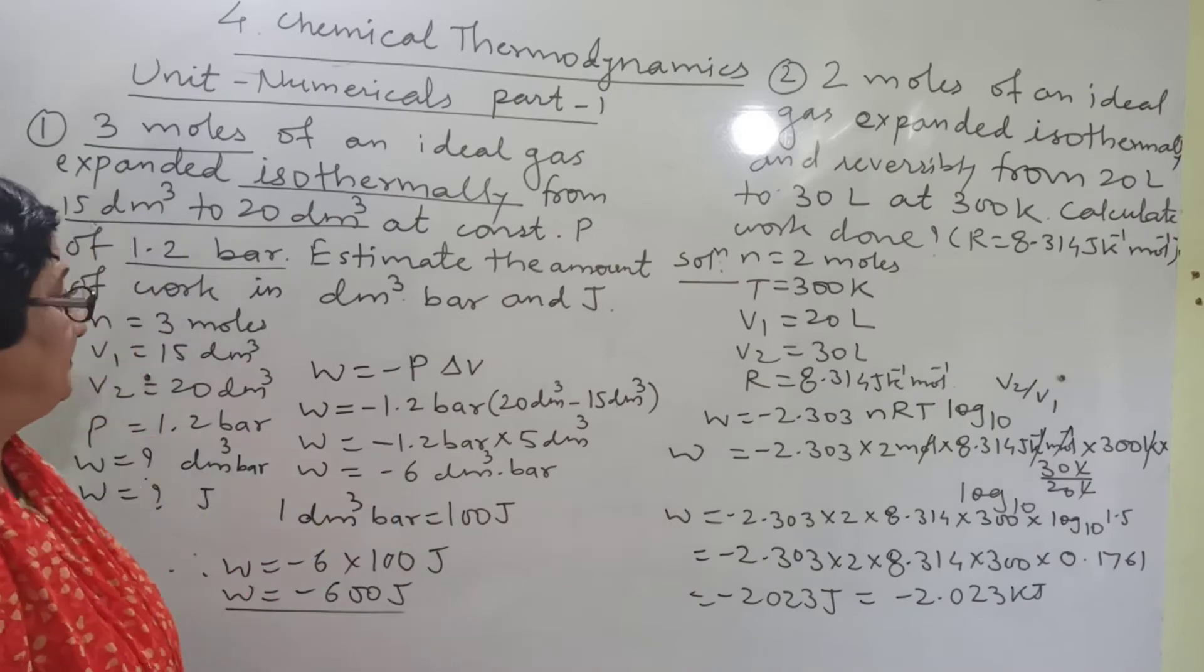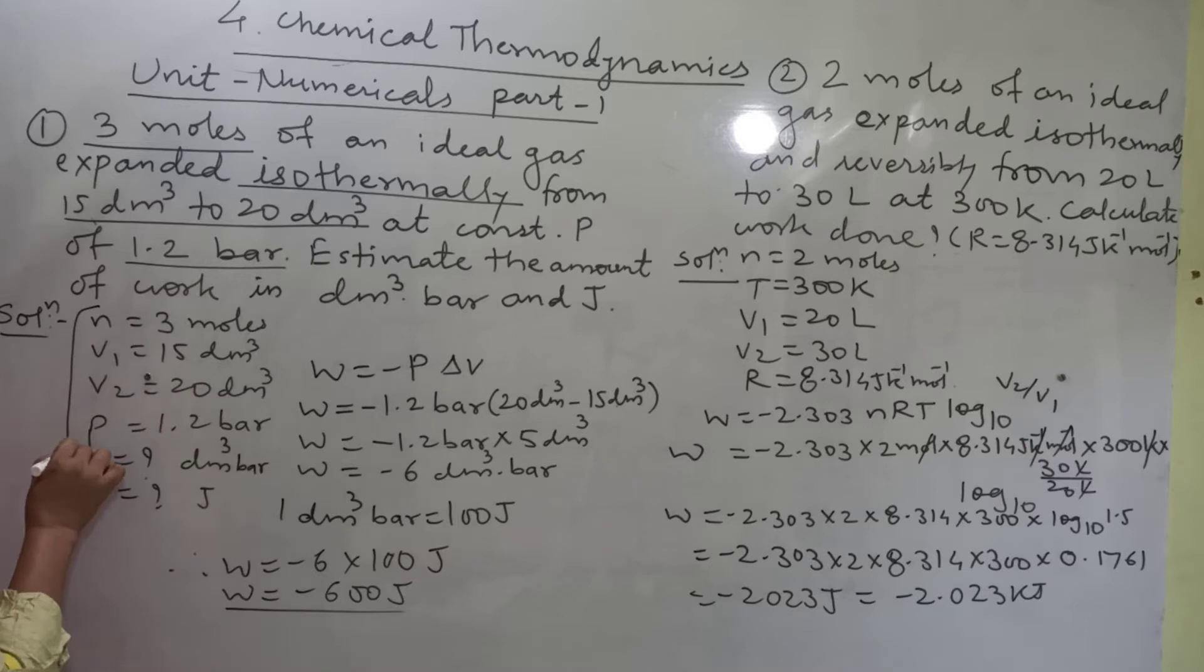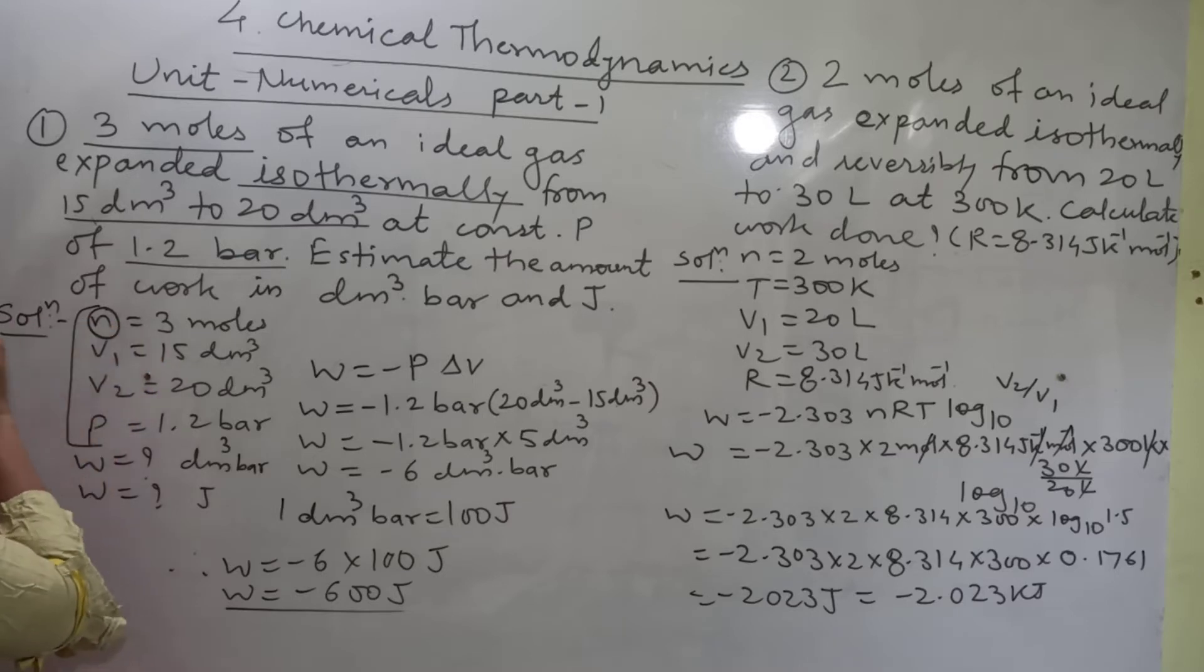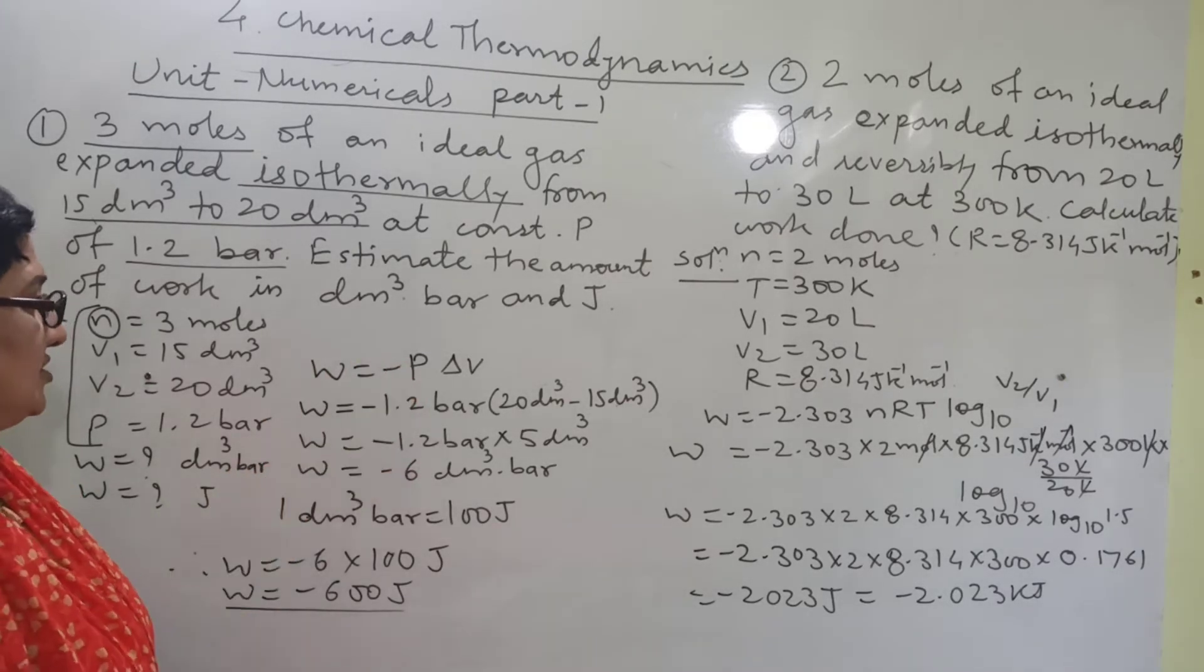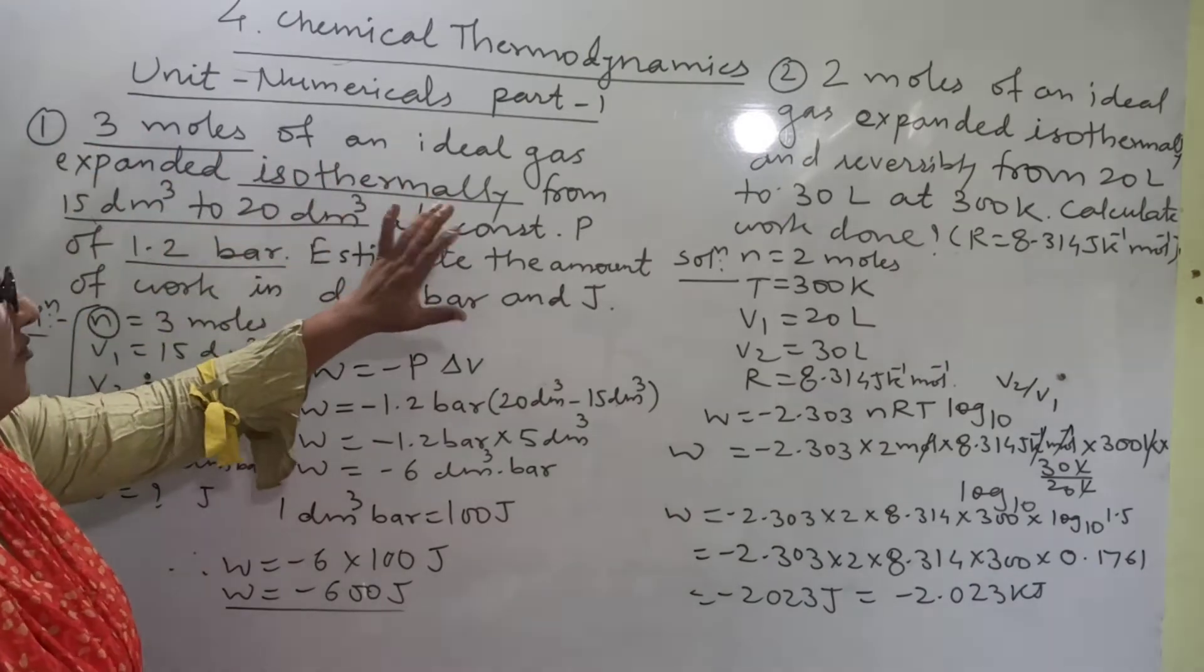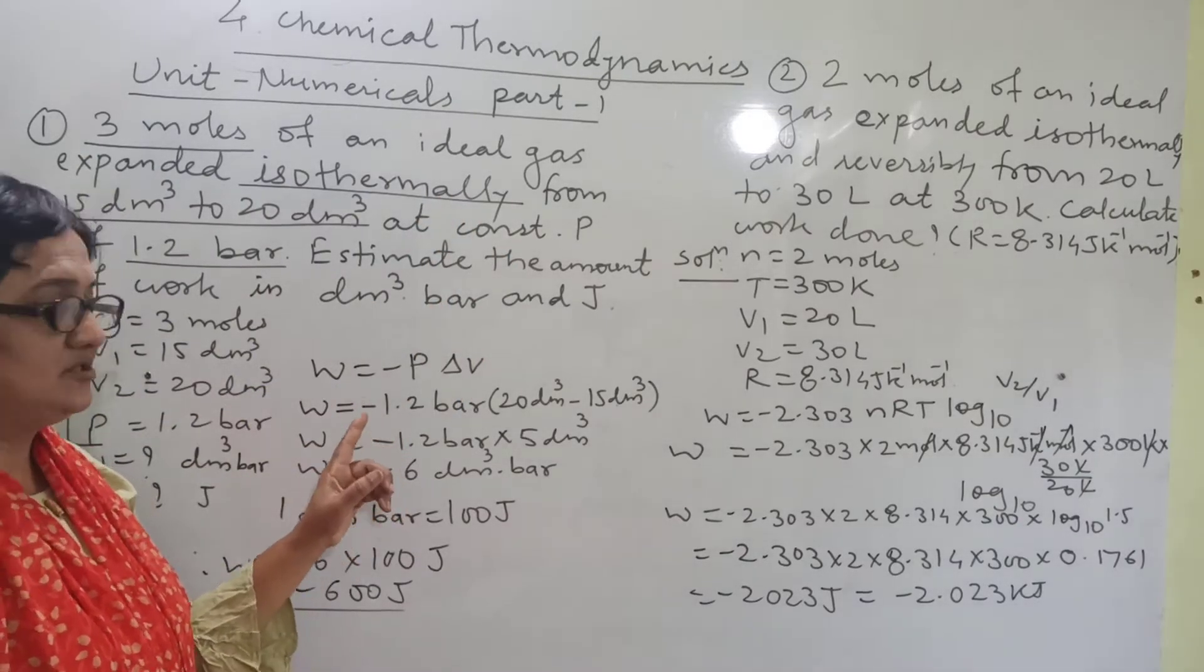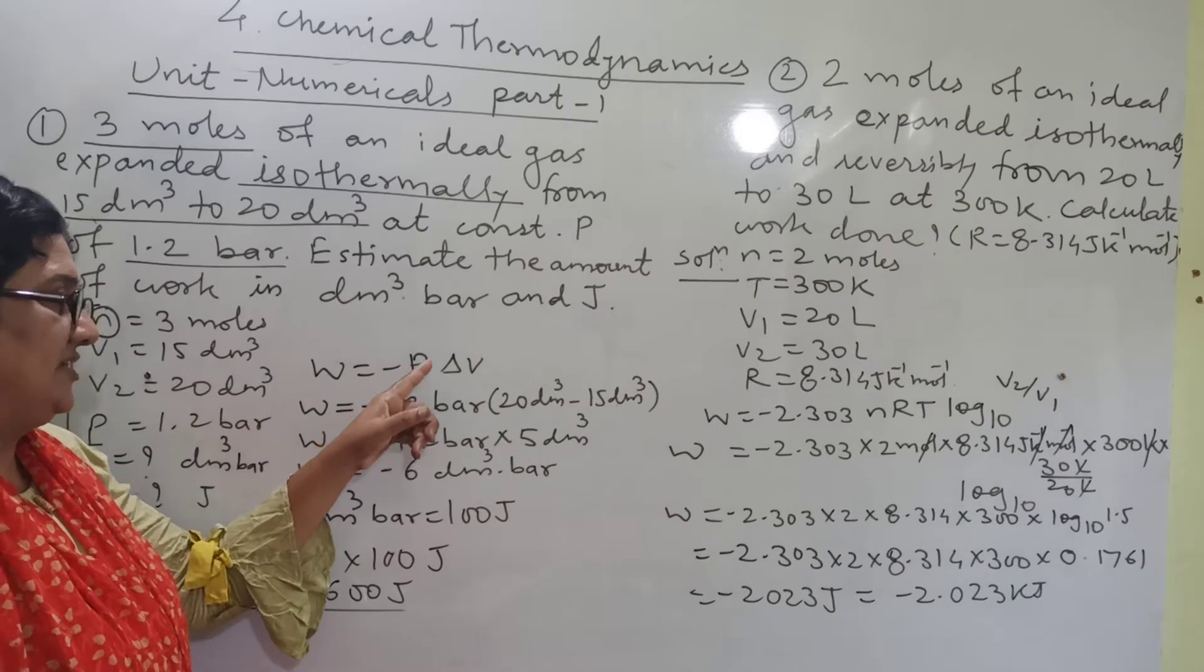So what is your job? First write down all the data given. Here number of moles are given, V1 is given, V2 is given and pressure is given. Out of these 4 values, n is not of any use for us. It is given as extra which is not to be used in the calculation. Now what is the problem? Problem is the pressure volume type of work. From this isothermal word you come to know the formula used will be simple pressure volume type of work.